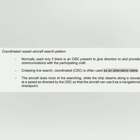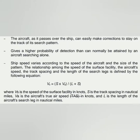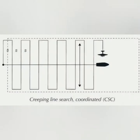The coordinated vessel-aircraft search pattern, also called creeping line search coordinated (CSC), is used when an on-scene coordinator is present to provide direction and communication. In this pattern, the aircraft does all the searching while the ship steams along the course at a speed directed by the on-scene coordinator, serving as a navigational checkpoint. The aircraft uses the vessel for track correction, increasing the probability of detection. Ship speed varies depending on aircraft speed and can be calculated using the given formula.